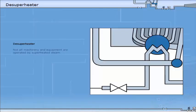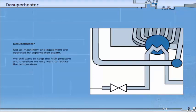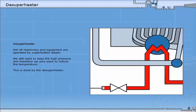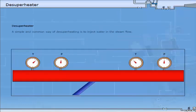Not all machinery and equipment are operated by superheated steam. We still want to keep the high pressure and therefore we only want to reduce the temperature. This is done by a de-superheater. A simple and common way of de-superheating is to inject water in the steam flow.